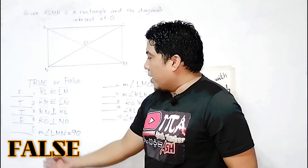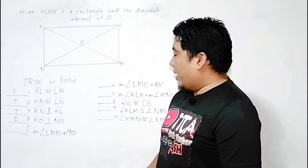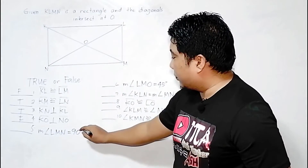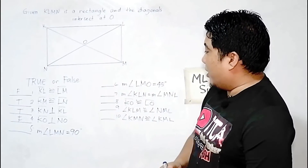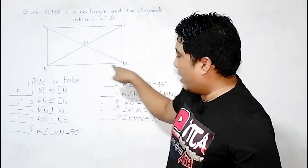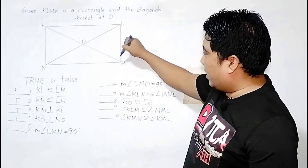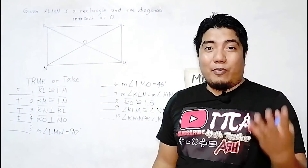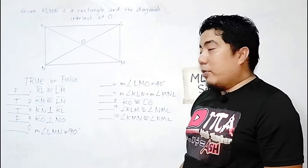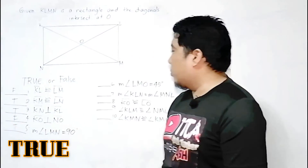Statement 5: The measurement of angle LMN is 90 degrees. Angle LMN is one of the angles in the rectangle. Since all angles in a rectangle are 90 degrees, this is true.